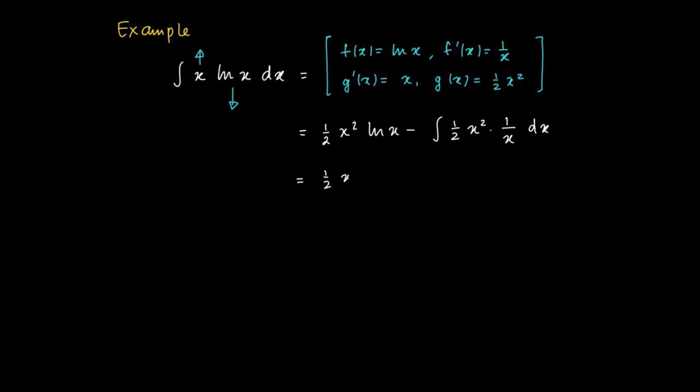Now we see that we get a much easier remainder integral, since one of the terms x cancels against 1 over x. So our remaining problem is to solve for a primitive of a half times x, but that's not really an issue.